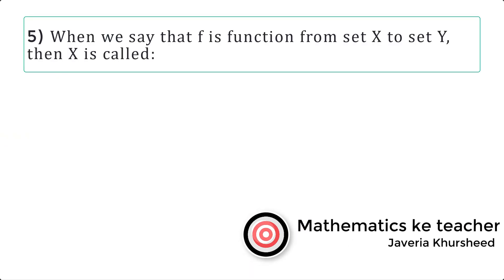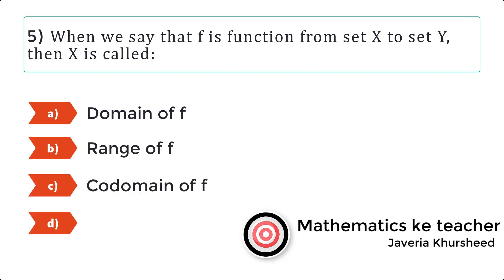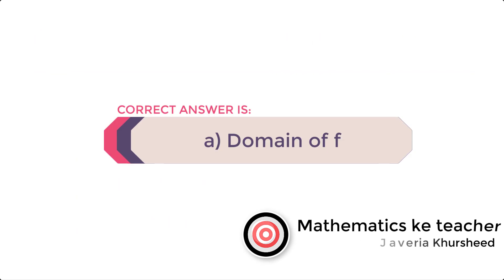Question 5. When we say that f is a function from set X to set Y, then X is called: a) domain of f, b) range of f, c) codomain of f, d) none of these. Correct option is a) domain of f.